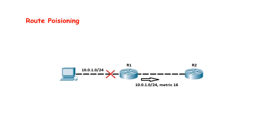The next method is route poisoning — when a router detects that one of its directly connected routes has failed, it sends an advertisement for that route with an infinite metric of 16. For example, R1 is directly connected to 10.0.1.0/24 and advertises it to R2 via RIP. When R1's interface fails, R1 sends an update to R2 indicating the route has failed with a metric of 16, which exceeds RIP's maximum hop count of 15. R2 then considers the route unreachable, thereby avoiding a routing loop.